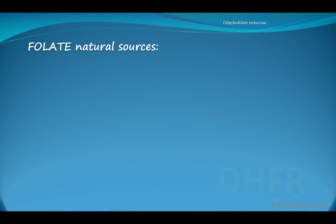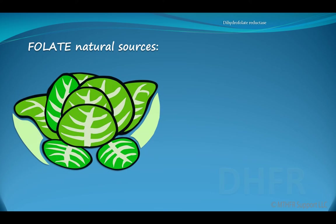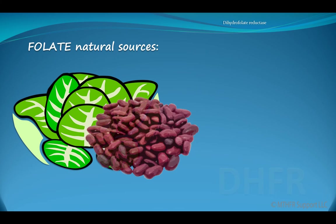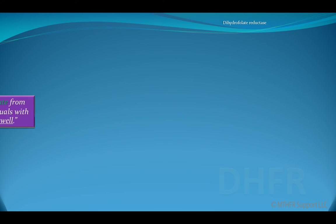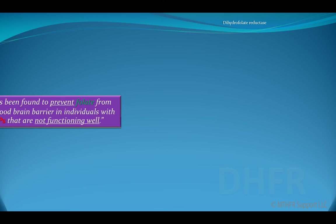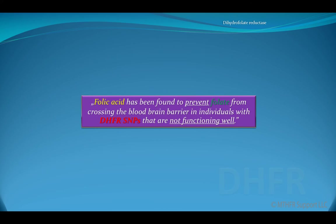You can get natural sources of folate in leafy greens, beans, eggs, and berries. Folic acid has been found to prevent folate from crossing the blood-brain barrier in individuals with DHFR SNPs that are not functioning well.